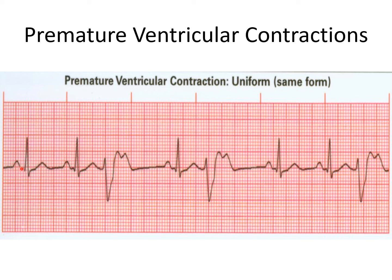The PVC is always wide and bizarre—that is how we describe it. It came before the expected P wave and is therefore premature. Eventually, the heartbeat returns to normal, but when we see repeated wide and bizarre complexes interrupting the normal rhythm, those are PVCs. If the shapes are identical, we call them uniform PVCs, meaning they originated from the same area of the heart.